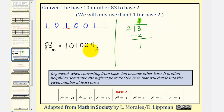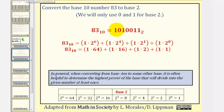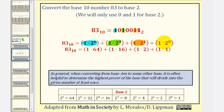Of course, if we want to check this, we can go in reverse order. This 1 is in the 2 to the 6th place value, this 1 is in the 2 to the 4th place value, this 1 is in the 2 to the 1st place value, and finally this 1 is in the 2 to the 0, or 1's, place value. If we find the sum of these products, it does give us 83 in base 10.